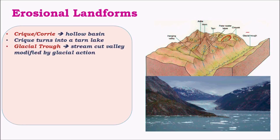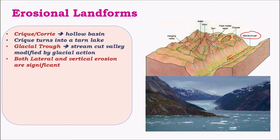The next one is a glacial trough, which is formed due to both vertical and lateral erosion by a glacier. In glacial erosion, both lateral and vertical erosion play a significant role, and as a result most valleys are U-shaped.